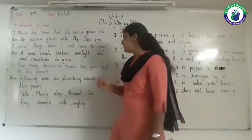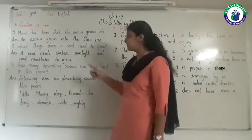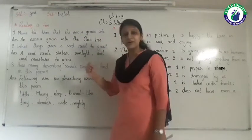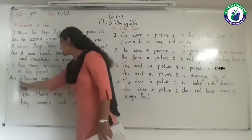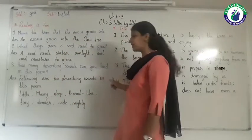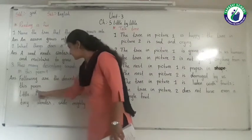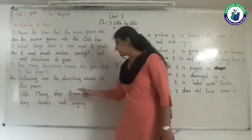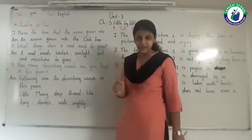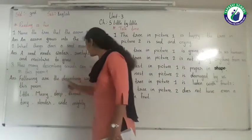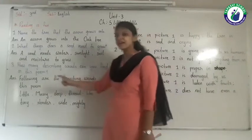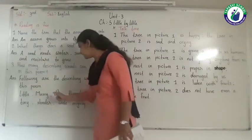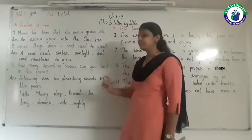Number 3: How many describing words can you find in this poem? Following are the describing words in this poem: little, mossy, deep, thread-like, tiny, slender, wide, mighty. So here the topic Reading is Fun is completed.